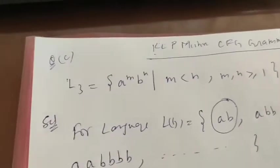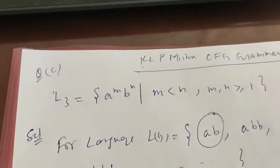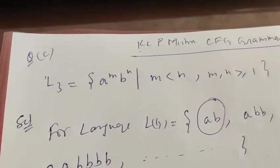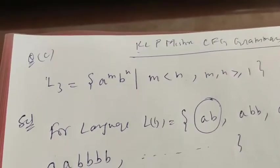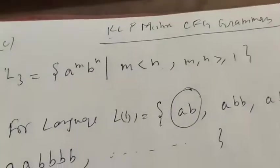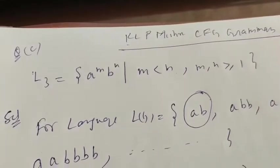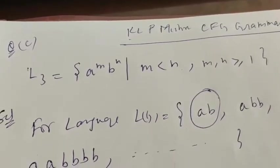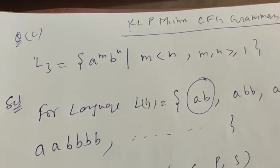Hello students. In continuation of the previous topic, example 4.19 C part of context free grammar of KLP Mishra. Make a grammar for a to the power m, b to the power n, m less than n, and m and n greater than or equal to 1.